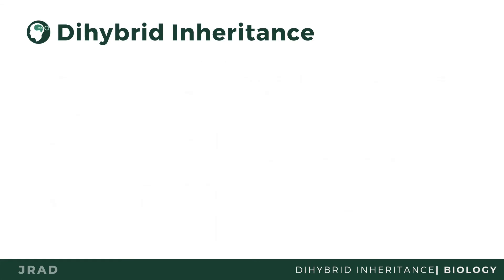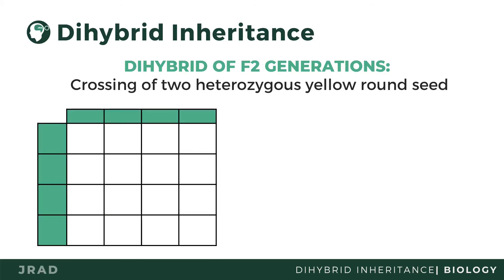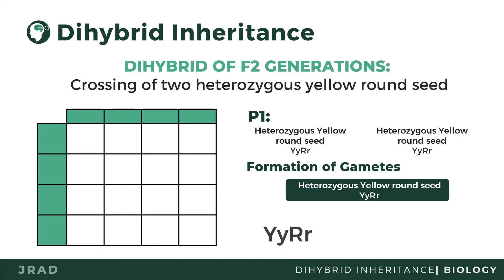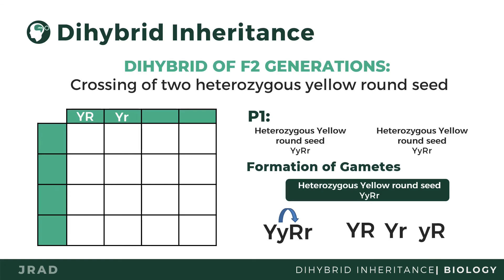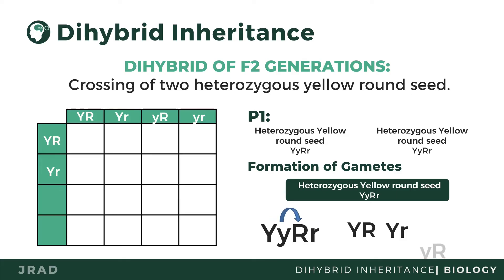The F1 plants were then allowed to self-fertilize. Using the FOIL method, we can now identify the gametes formed. Each plant produces four kinds of gametes: uppercase Y uppercase R, uppercase Y lowercase r, lowercase y uppercase R, and lowercase y lowercase r. Since the F1 plants are allowed to self-fertilize, we have the same gametes for both sides of the Punnett square.